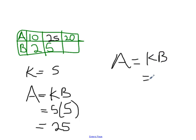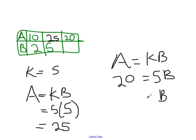In the next column, we don't know what b is — we know a is 20 and our k is 5, but we need to find b. From all indications, b will be 4, because we divide both sides by 5. So b is 4, and that's the table filled for direct proportion.